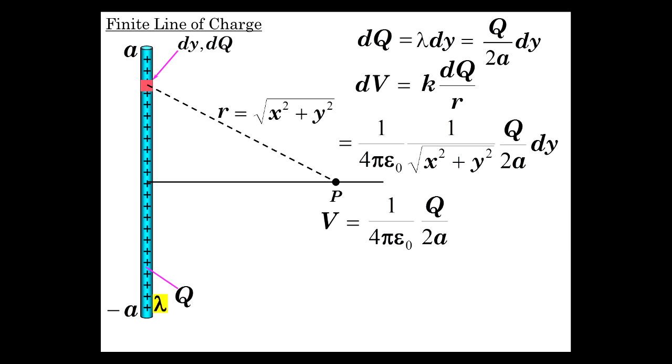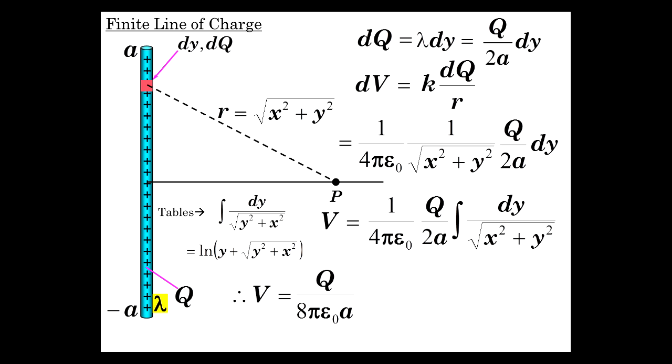Bring the constants out. Integral of dy over square root of x squared plus y squared. To give us some help from the tables, that form has this result: natural log y plus square root of y squared plus x squared. So let's use that to our advantage.